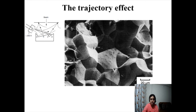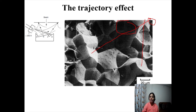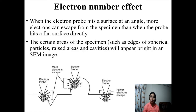You can see that areas directly facing the detector appear brighter — because more electrons are reaching the detector from there. Areas that are not facing the detector appear dull. In this image, the brighter areas indicate surfaces facing the detector, and the dark areas indicate surfaces facing away. This is the trajectory effect creating topographical contrast in the SEM image.